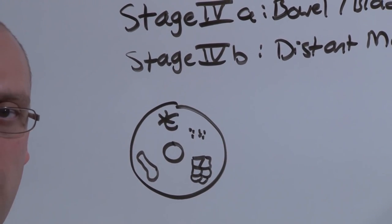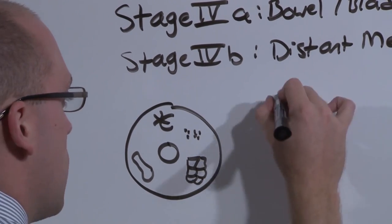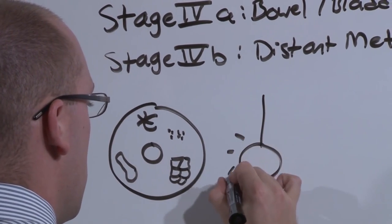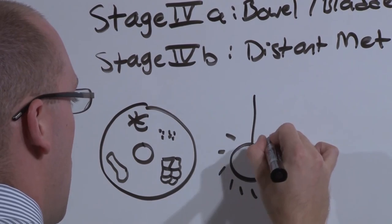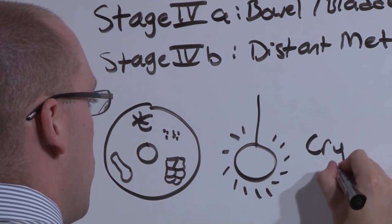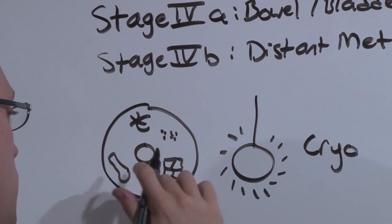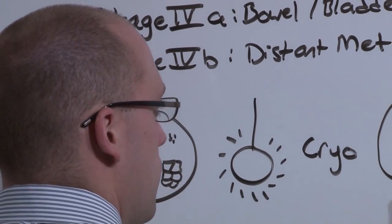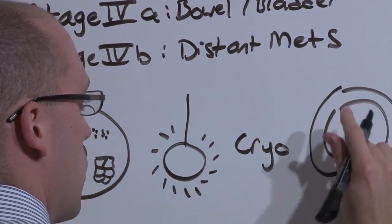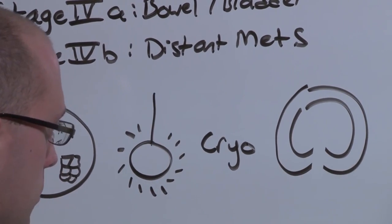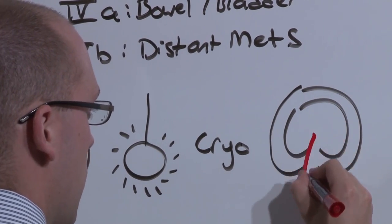If you have an ectocervical lesion, you're going to do local destruction. You're going to prevent it from ever becoming a cancer to begin with, and that's done either with LEEP, essentially hot wire that burns it away, or with cryo. If you have an endocervical lesion, you're going to perform a cone biopsy.